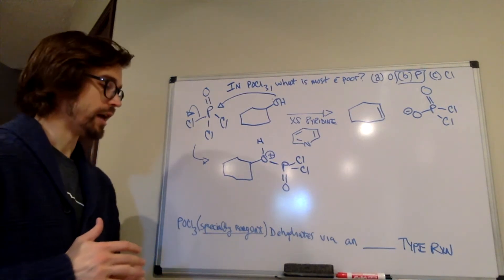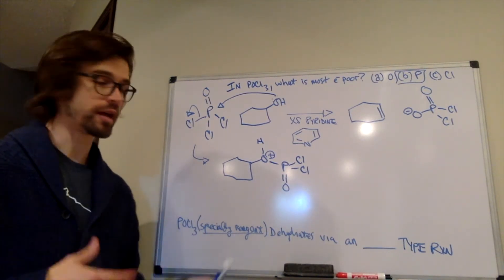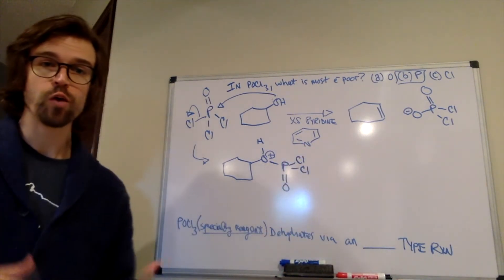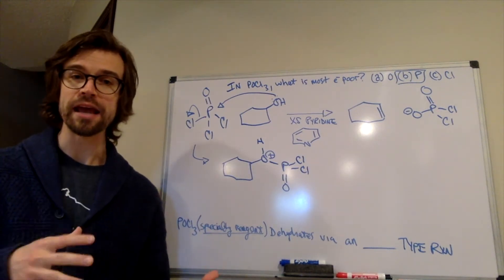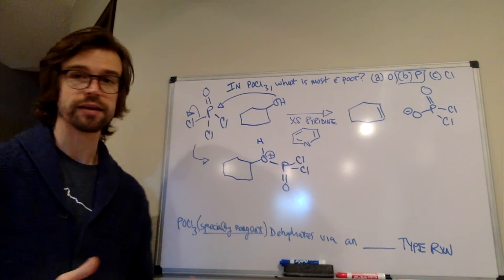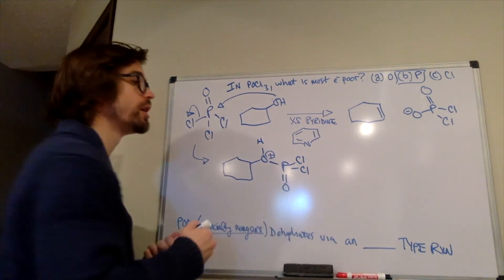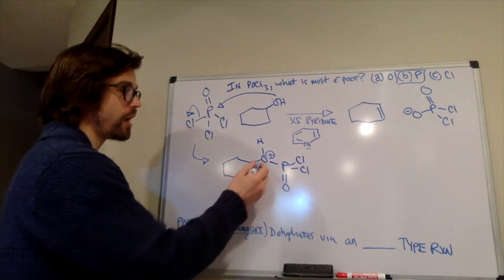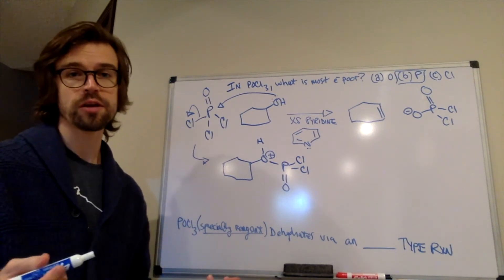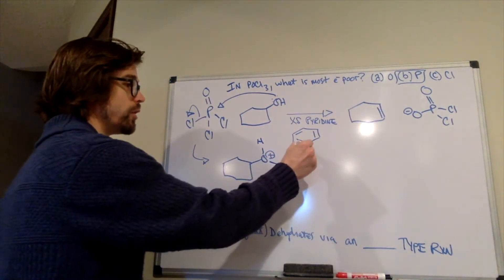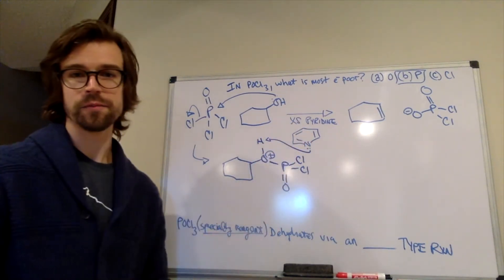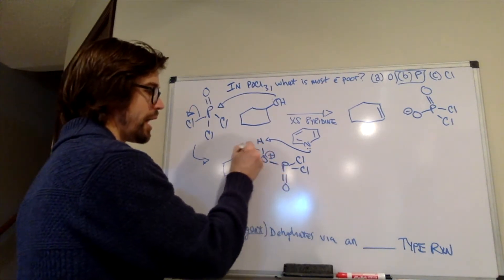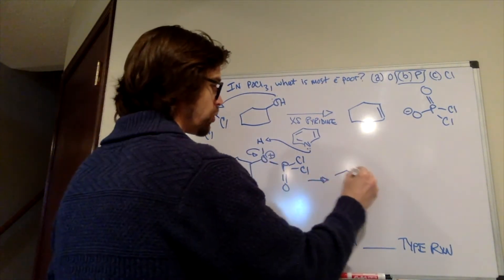We also have something else in this reaction that's new, but you're going to see it a lot in organic chemistry 1 and 2 — it's called pyridine. Pyridine is a weak base. We know based on pKa values that nitrogen, when it's neutral like this, is a weak base with a pair of electrons, and those electrons can pull off acidic protons. We know this oxygen is kind of in the form of hydronium ion, which is a strong acid. The first equivalent — and this 'xs' means excess — so there's a lot of pyridine around, and the first equivalent is going to pull off that hydrogen to generate the neutral oxygen molecule.